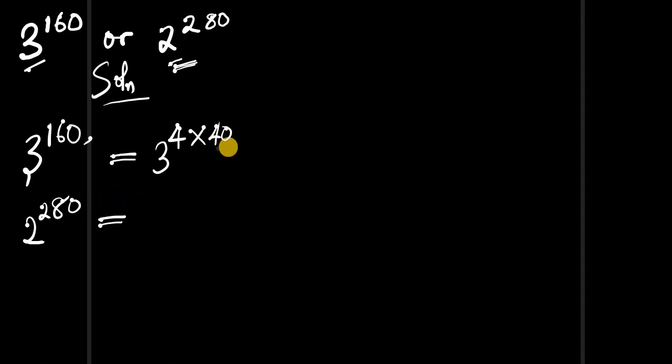That 40 corresponds to the 40 we used earlier, which helps us solve this faster. So we have 2 to the power of 7 times 40. Now we're working with 3 to the power of 4 times 40 and 2 to the power of 7 times 40.